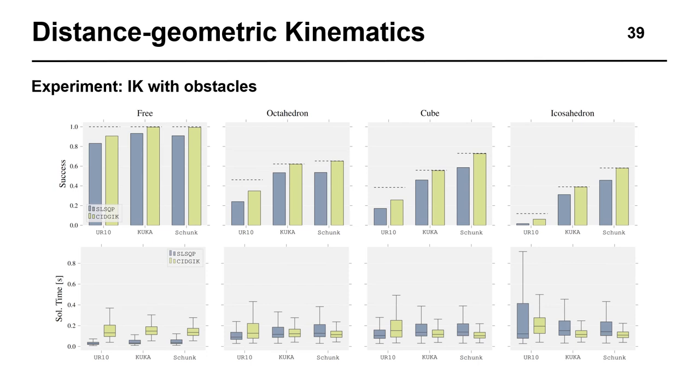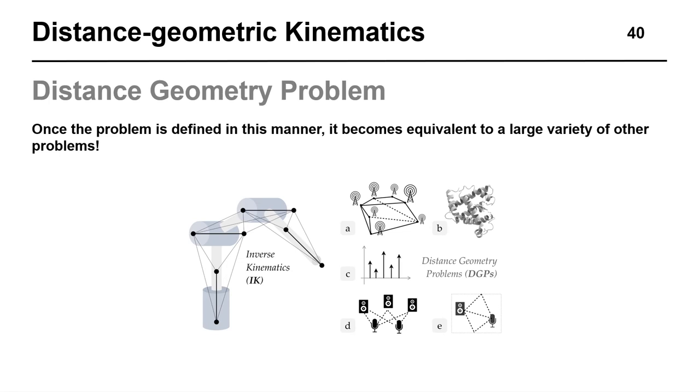Here, you can see the results obtained by solving 1,000 inverse kinematics problems over these environments for three different manipulators. The yellow bars represent the results obtained by our method, while the blue bars represent results obtained by a conventional solution method based on joint angles. Our method achieves a noticeably higher success rate, solving almost 100% of the feasible problems in all environments, while maintaining a relatively low solution time that does not scale significantly with the number of obstacles.